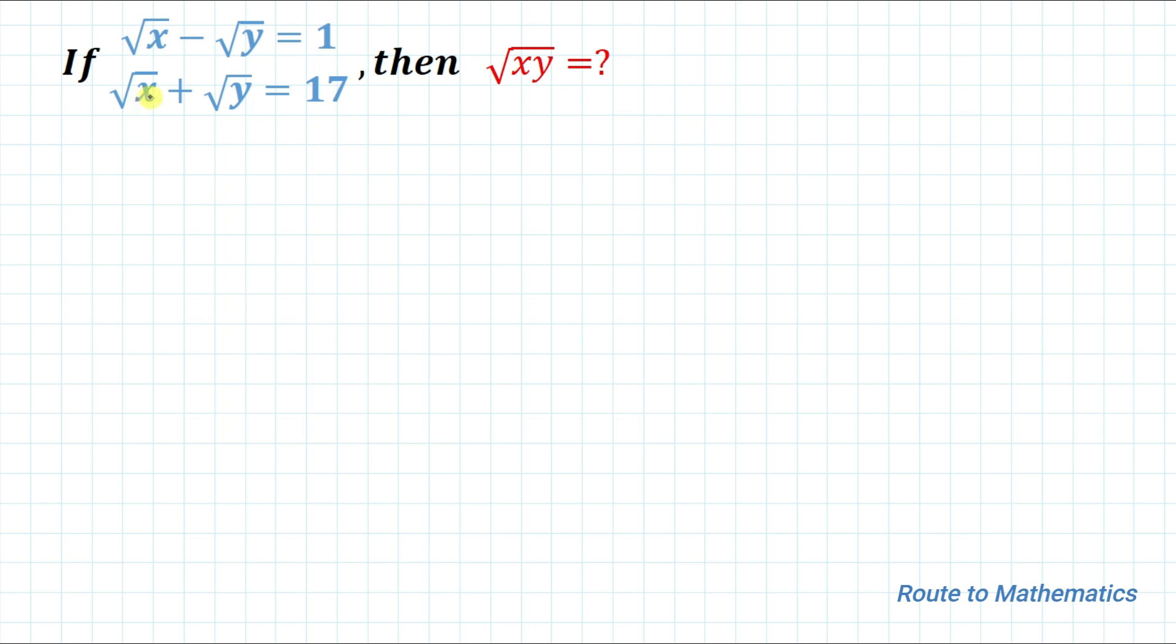The given set of equations are: root x minus root y equals 1, and the second equation is root x plus root y equals 17. So without any delay, let's start solving the equation.